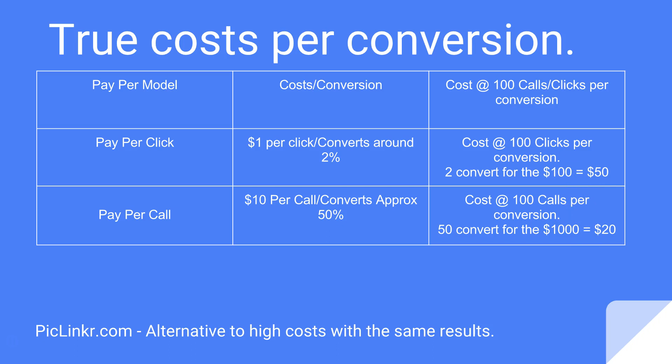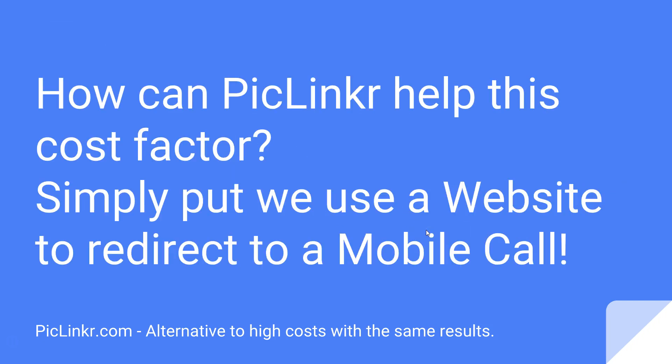That's two and a half times less — it's two-fifths of the price. That is a very good business model. If you can do a pay-per-call type of conversion at higher cost per unit, this is definitely the way to go. So how can Piclinker help this cost factor even further?